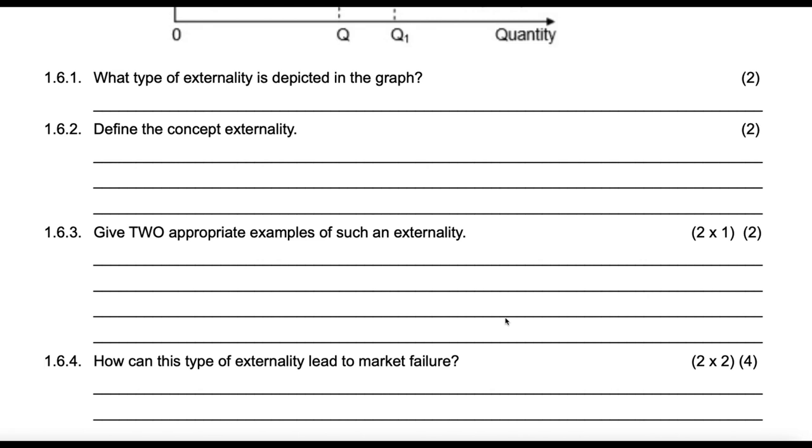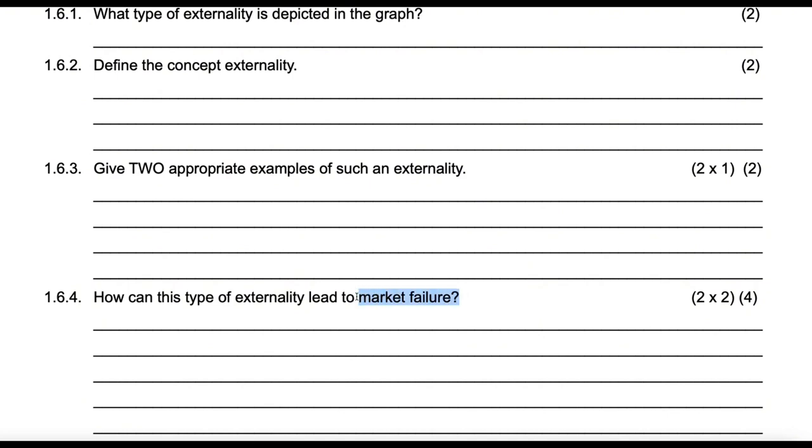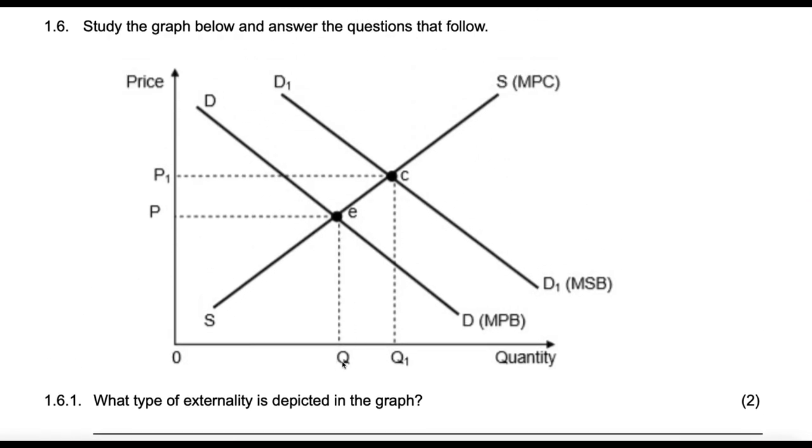Then how can this type of externality lead to market failure? Well, it takes us to what market failure is, and I defined it in the previous video. It is failure of markets to allocate resources at an optimum level. Now, markets have a tendency of undersupplying merit goods and oversupplying demerit goods. So with that said, in this case, this is market failure because markets are undersupplying a good that has a positive externality or a positive benefit to the community. And so markets are failing because they fail to quantify and include the external benefit. So for that, we'll find government intervening and bringing up consumption of such goods.